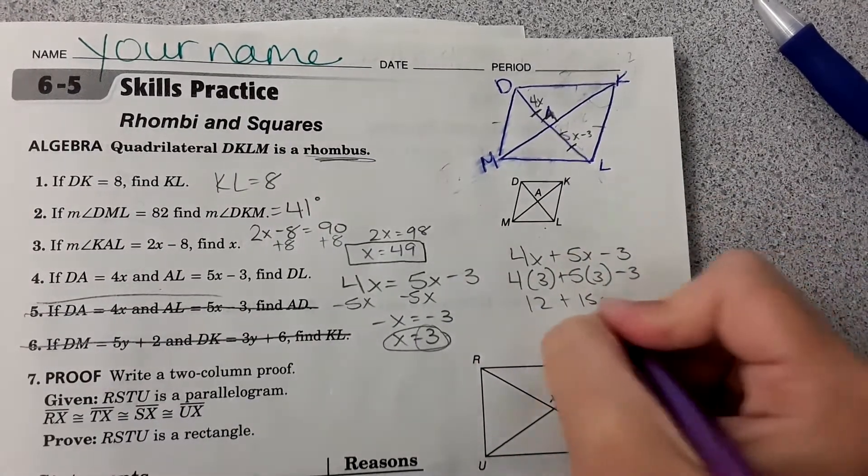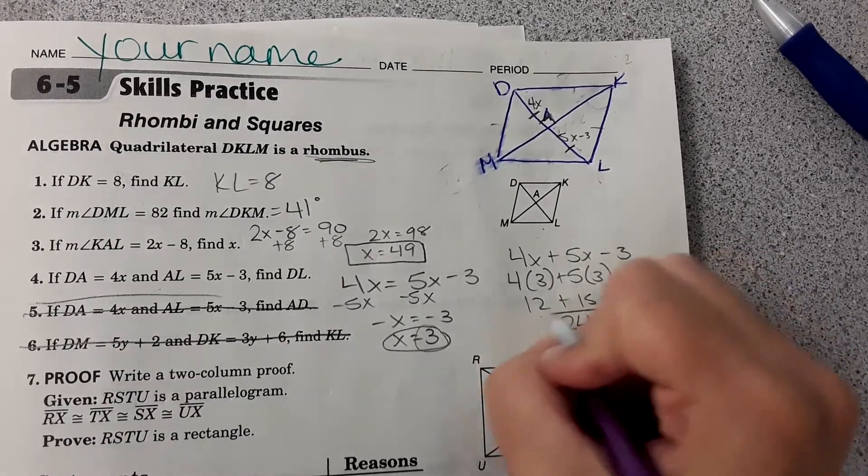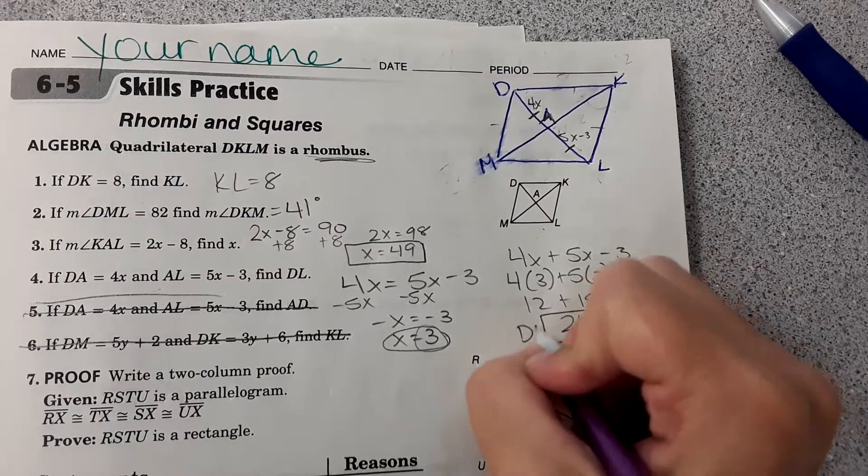DL equals 15. So we get 27 minus 3, which is 24. So DL equals 24.